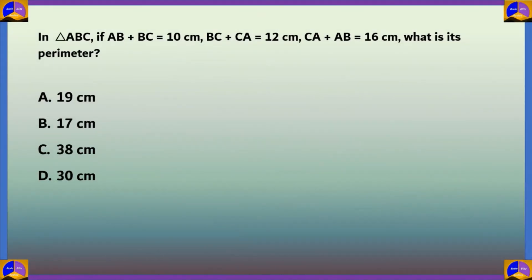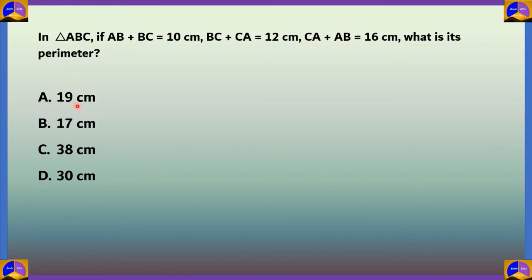Next question: In triangle ABC, if AB plus BC equals 10 cm, BC plus CA equals 12 cm, and CA plus AB equals 16 cm, what is its perimeter? Option A: 19 cm, Option B: 17 cm, Option C: 38 cm, Option D: 30 cm.